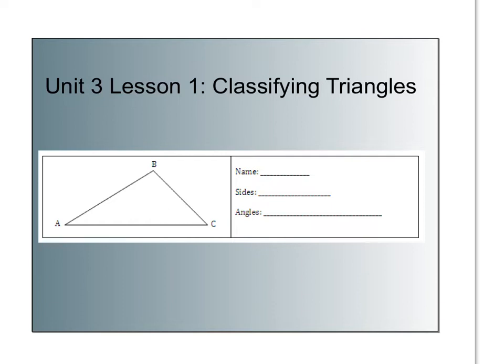We're going to start by classifying triangles today, and one of the things you need to know how to do is to name a triangle. You can see this triangle here in our picture has three corners, three vertices: A, B, and C.